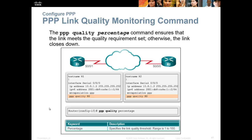You can also configure quality. If your link has issues, you can use 'ppp quality 80'. That means if you're not getting 80% of your bandwidth, or line quality degrades below 80%, the link won't be used until it goes back up to 80%.